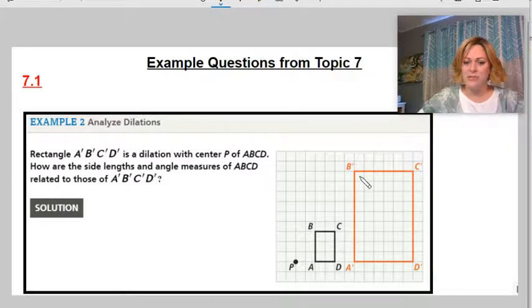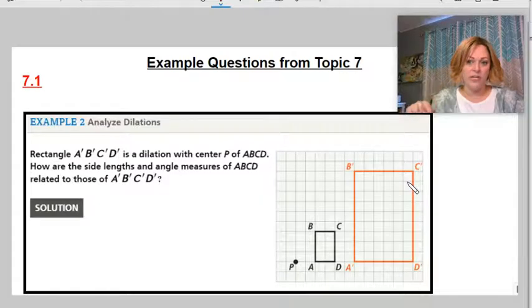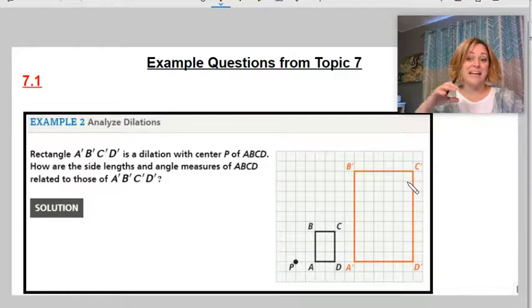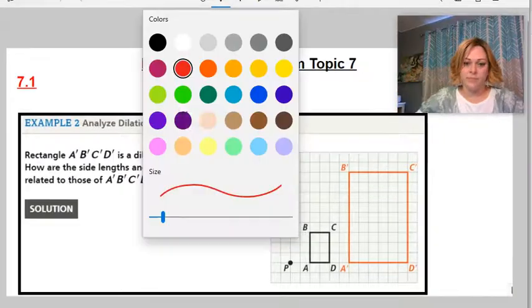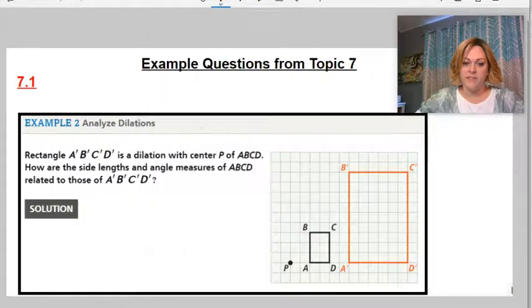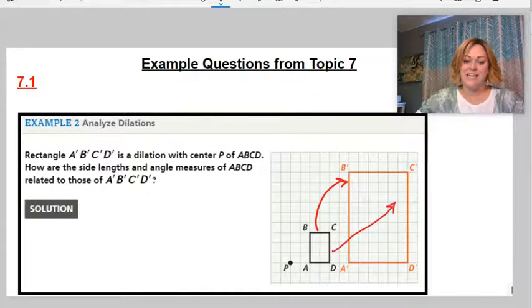And so it basically says, how is this affected? Well, if you notice all the angles did not change. All the angles are congruent, but all the side lengths got bigger and they got bigger proportionally. To get from this rectangle down here to this rectangle over there, you had to multiply every single side length by the same scale factor.